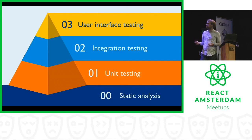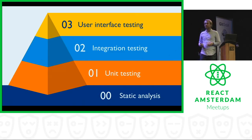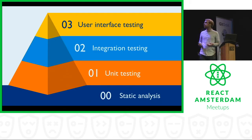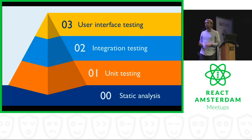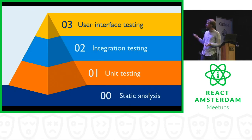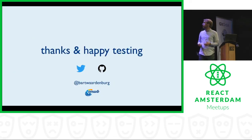So this is the pyramid — it's complete. When you go up the pyramid, testing gets harder and there are more things to worry about, but the actual value for your users also goes up. With a complete user interface test setup you can cover all the edge cases, while with just static analysis you can't. It doesn't mean you don't have to do the lower layers — just know that they're all there. Thanks for listening and happy coding.